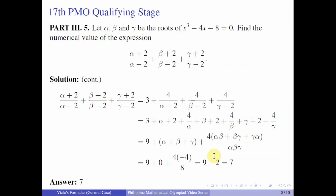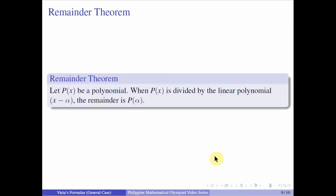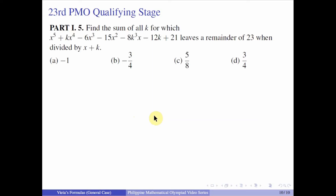So the answer for this item is 7. For the last item, we will be introducing the remainder theorem. Let P of X be a polynomial. When P of X is divided by the linear polynomial X minus alpha, the remainder theorem says the remainder is P of alpha — we just plug alpha into P of X. Let us proceed to the 23rd PMO qualifying stage, Part 1, number 5. Find the sum of all K for which x to the 5th plus Kx to the 4th minus 6x cubed minus 15x squared minus 8K cubed times x minus 12K plus 21 leaves a remainder of 23 when divided by X plus K.